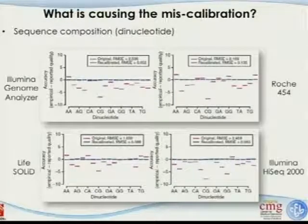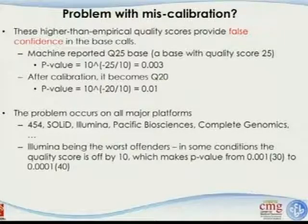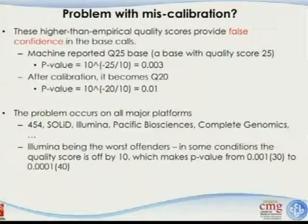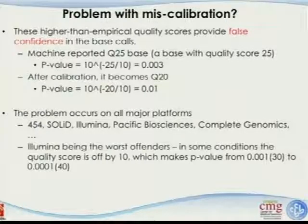The miscalibration can be in the minus five to minus seven or eight range. Higher-than-empirical quality scores provide false confidence. For example, a machine reports Q25 (p-value ~0.003), but after recalibration it becomes Q20 (p-value 0.01) — not as good. For some dinucleotides on some platforms the offset is as large as seven units, meaning the quality score is dramatically overcalibrated.